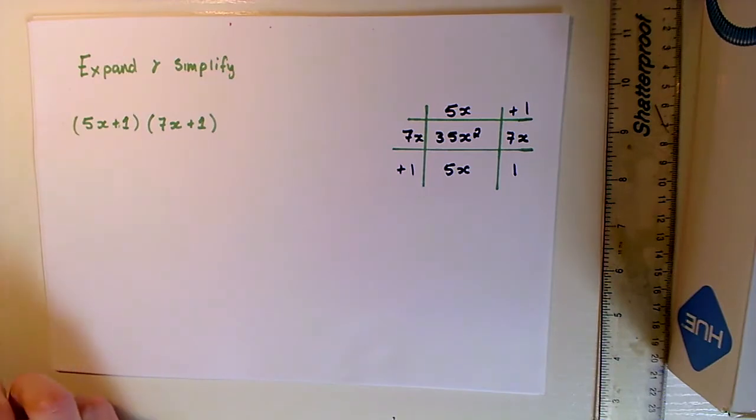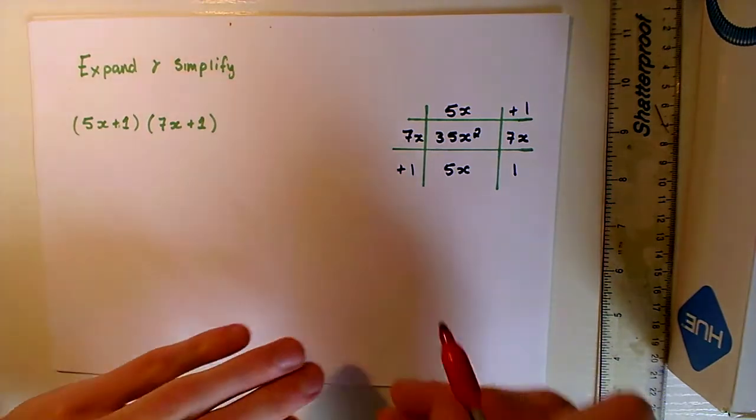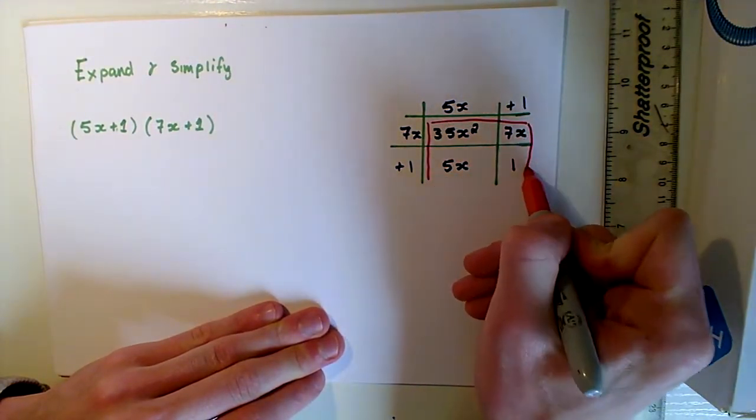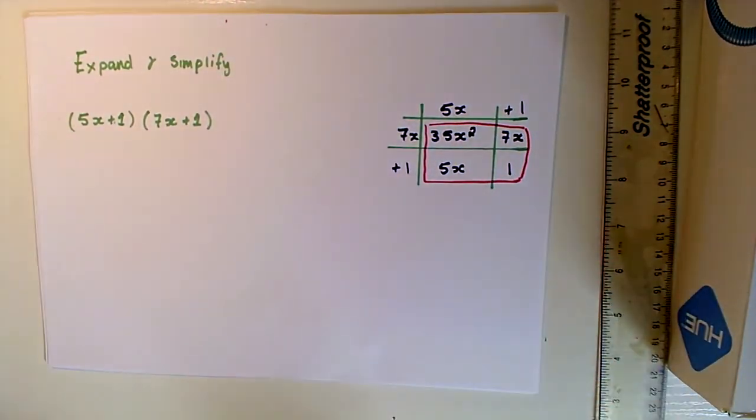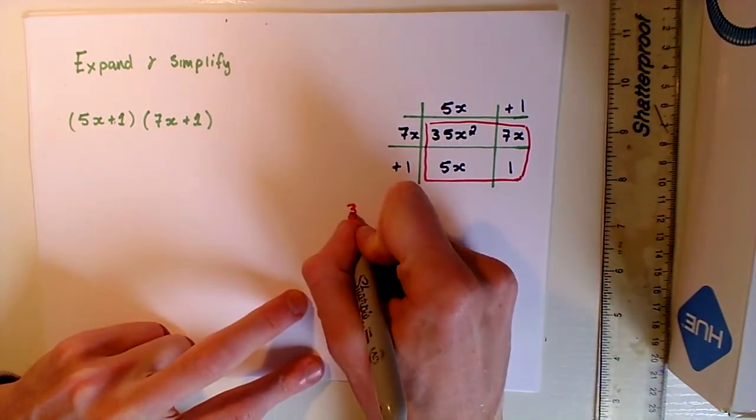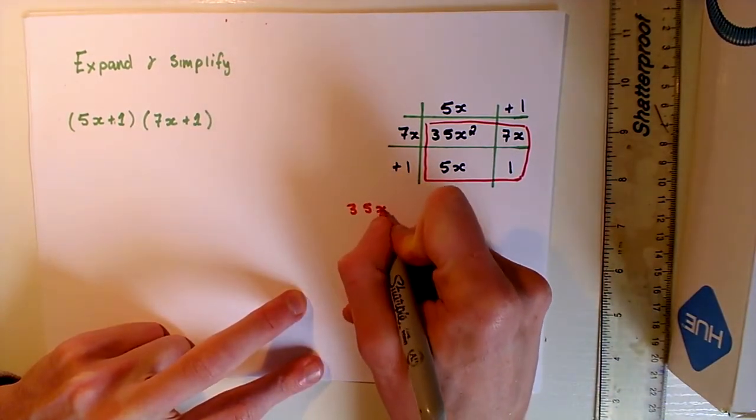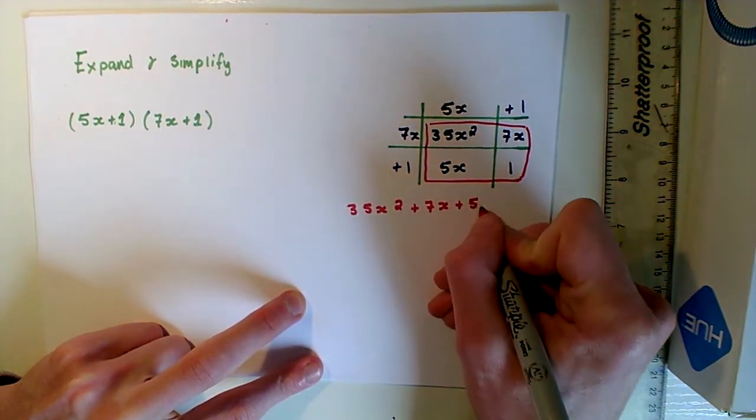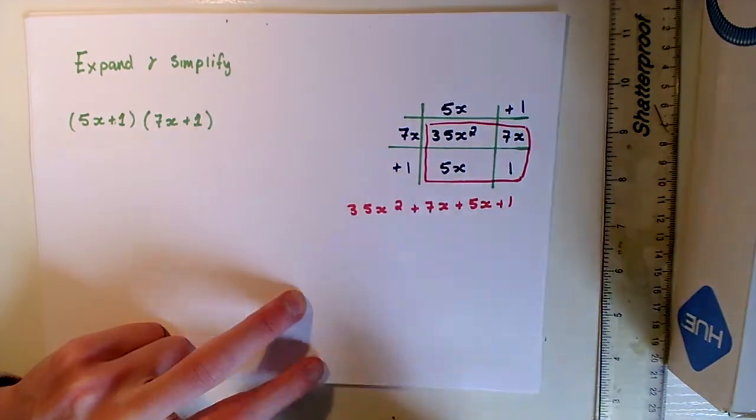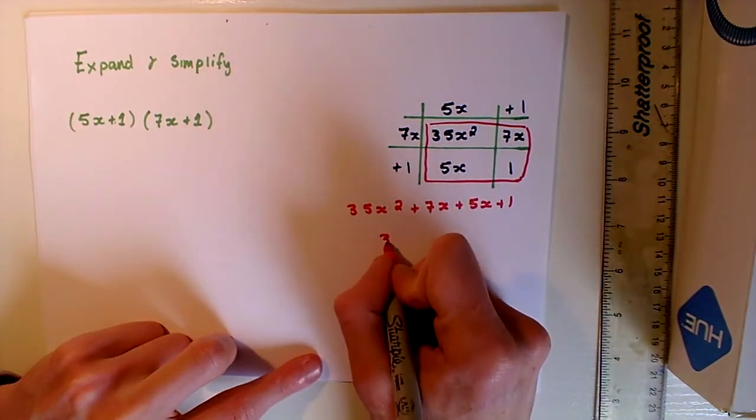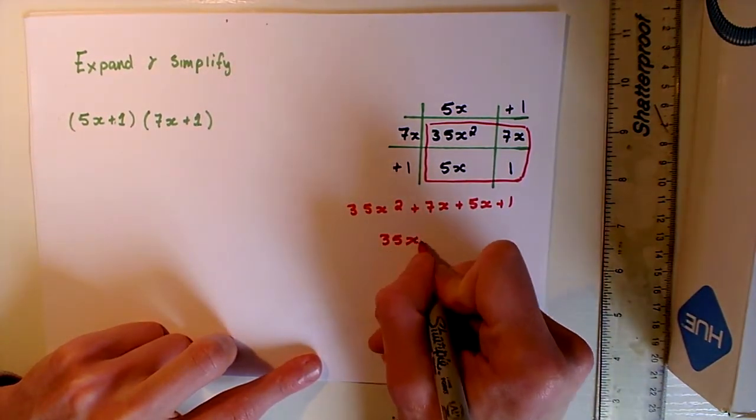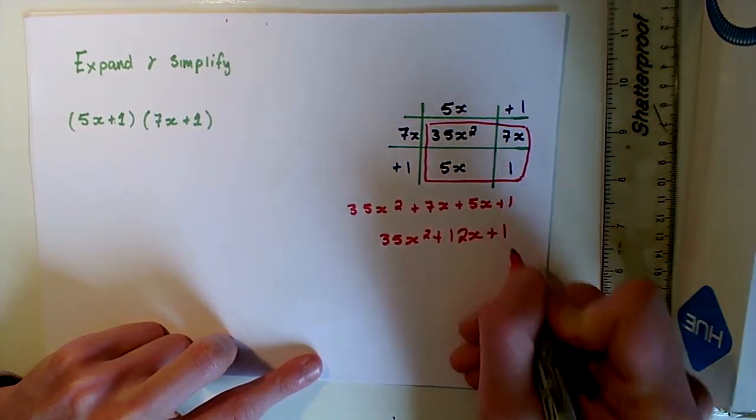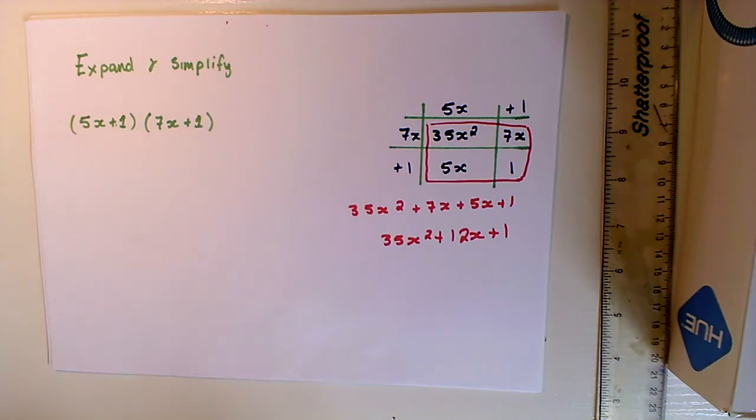Now what we do is we take out all of the elements that are inside the red area. We take all of those out and we're left with 35X squared plus 7X plus 5X plus 1. We can simplify this a bit further. 35X squared remains, 7X plus 5X is 12X, and 1 remains as 1. So that is a solution to that question there. Now we will look at the alternative method of solving this.